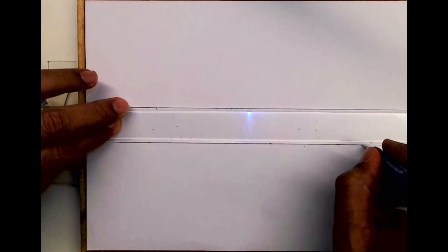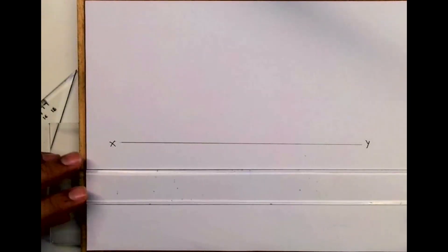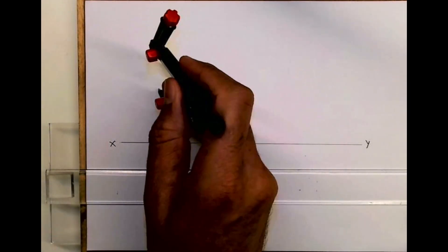Front view will give you true shape. We are doing first angle, so front view will come above the XY line. We'll draw a circle in front view with radius 28mm.